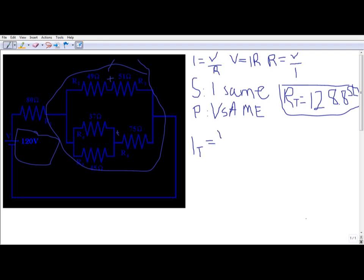IT equals VT over RT, which is 120V over 128.8 ohms. When you put that in your calculator, you get the current.